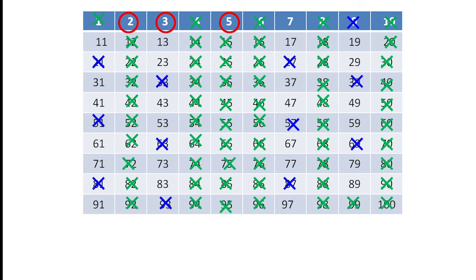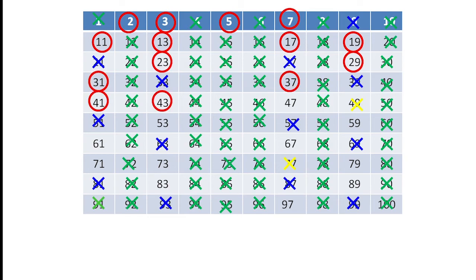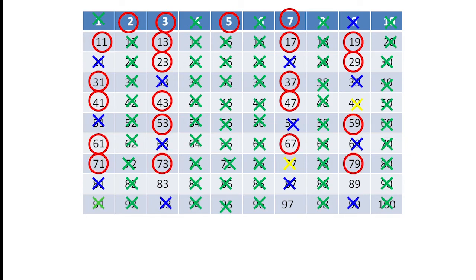Next, 7 is a prime number, so we circle 7 and cross out all the multiples of 7. Then: 11, 13, 17, 19, 23, 29, 31, 37, 41, 43, 47, 53, 59, 61, 67, 71, 73, 79, 83, 89, and 97 are prime numbers.